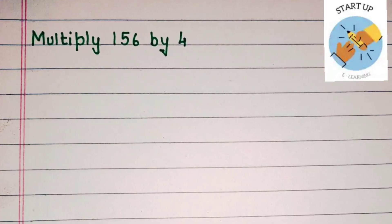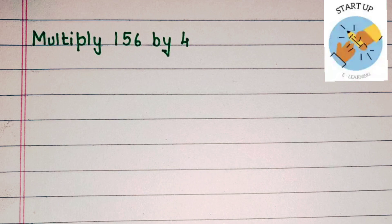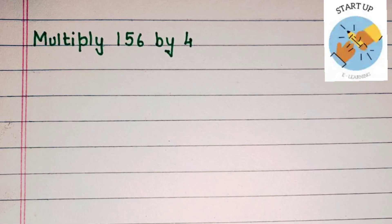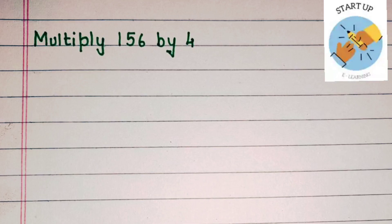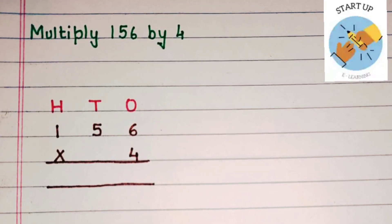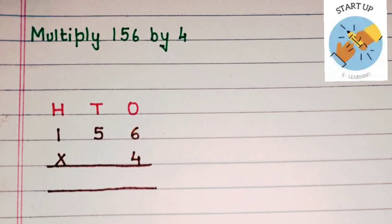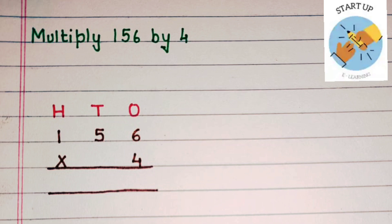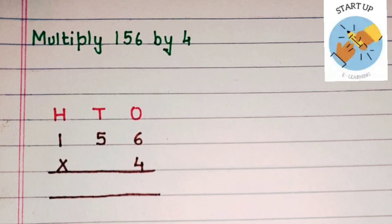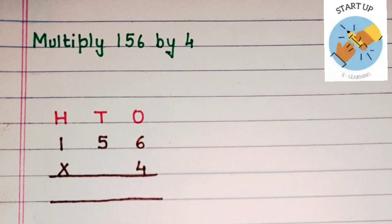Let's solve an example. Multiply 156 by 4. But before solving it, we need to arrange it according to its place value. We will write 6 under 1's, 5 under 10's, and 1 under 100's. The number by which we are multiplying is 4 and it is a single digit number, so we will write it under 1's place, under 6.